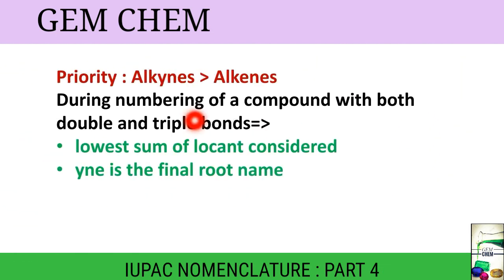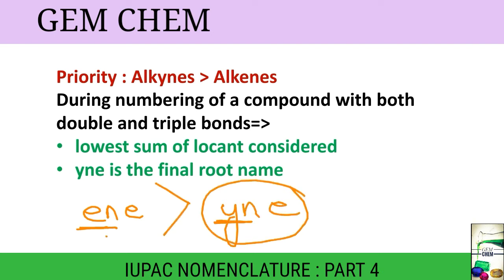Now before going, we will see both for alkynes and alkenes. During numbering of a compound with both triple bond and double bond, lowest sum of locant is considered. 'En' is the final root name. Since we know that 'en' is alphabetically first and 'yne' is having 'y', so this comes first, then we write 'yne'. So we will follow this rule.